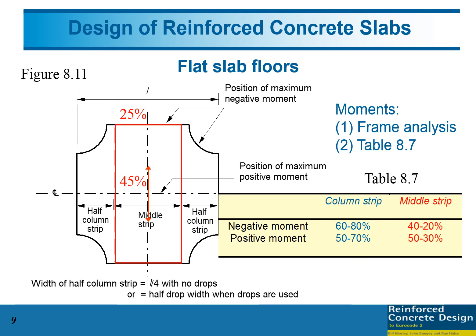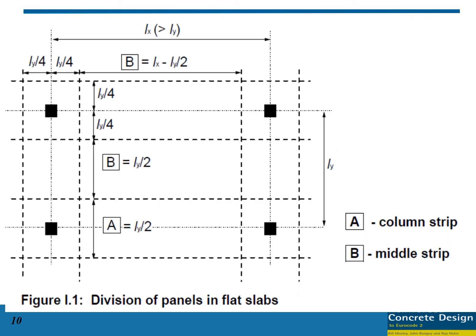In Table 8.7, there are column strip and middle strip entries for both negative moment (at support) and positive moment (at mid-span). For example, the column strip takes 60% of the negative moment, and the middle strip takes the remaining 40%, since the total must equal 100%. For positive moment, the column strip may take 50%, and the middle strip also takes 50%.